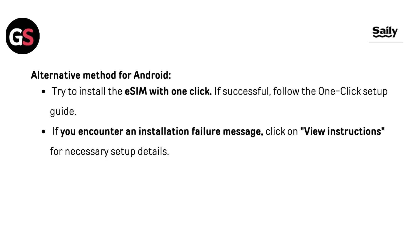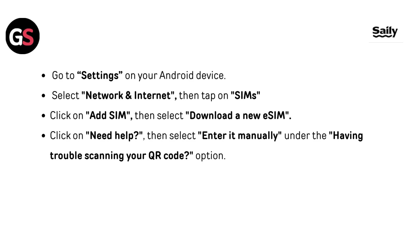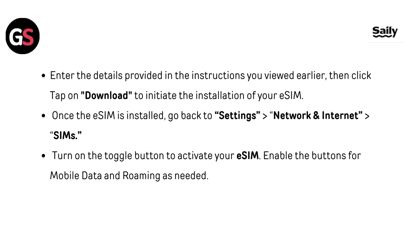Alternative method for Android: Try to install the eSIM with one click. If successful, follow the one-click setup guide. If you encounter an installation failure message, click View Instructions for the necessary setup details. Go to Settings on your Android device, select Network and Internet, then tap on SIMs. Click Add SIM, then select Download a New eSIM. Click Need Help, then select Enter It Manually under the having trouble scanning your QR code option. Enter the details provided in the instructions you viewed earlier, then tap Download to initiate the installation of your eSIM.